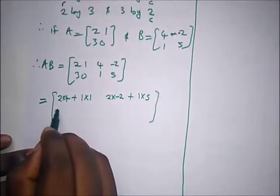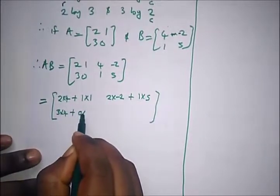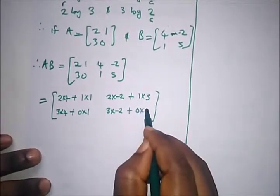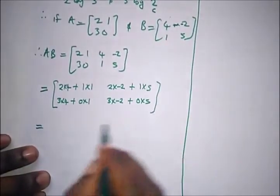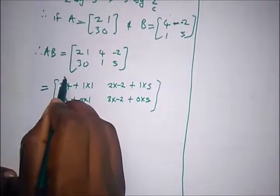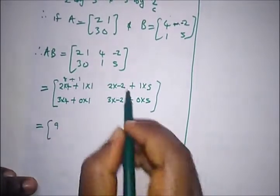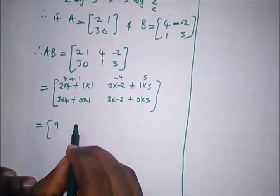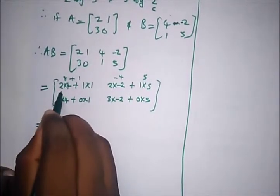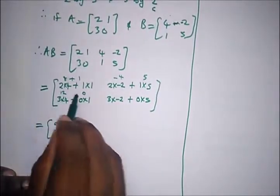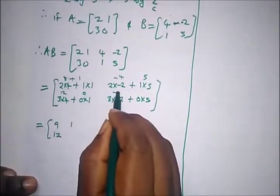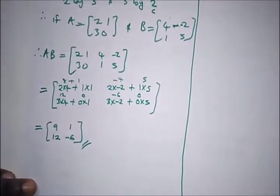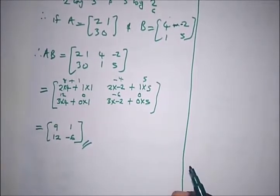The second row [3 0] gives: 3×4 + 0×1, and 3×(−2) + 0×5. Simplifying: 8+1 = 9; −4+5 = 1; 12+0 = 12; −6+0 = −6. So AB = [9 1 / 12 −6]. Thank you for staying tuned to Destined to Win Tutorials.